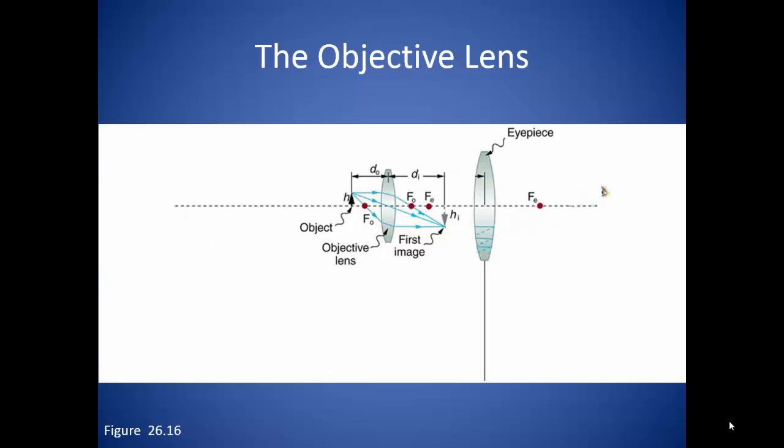This object is some height, H, and some distance from the objective lens, DO. Because of the size involved, we can safely say that the object distance is the same as the focal point of the objective lens.